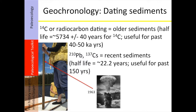The other technique that we rely on is lead-210 and cesium. All of these are radioactive isotopes, and so they decay at a known rate. Carbon-14 decays at a rate of about 5,734 years. Lead-210 is about 22.2 years, so it decays much more rapidly than carbon-14, meaning we can only use lead-210 for about the last 150 years.